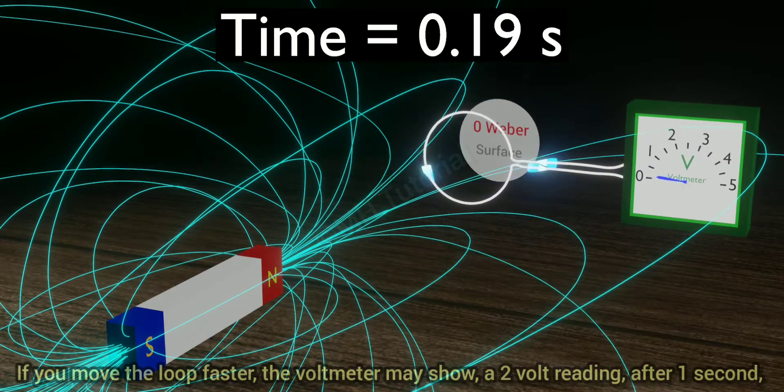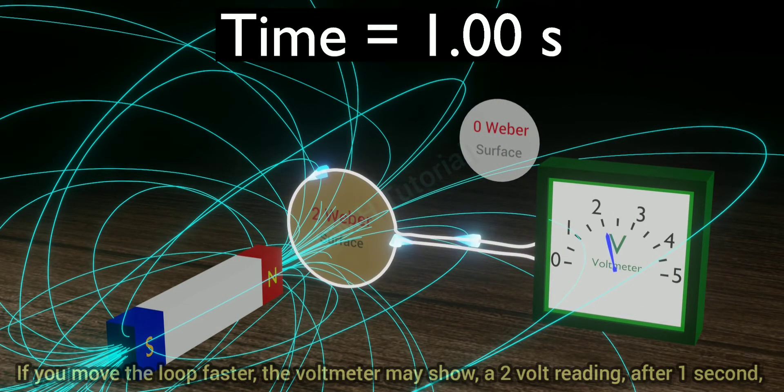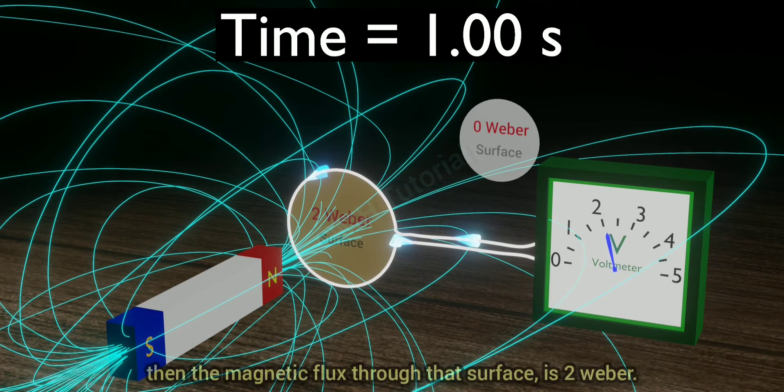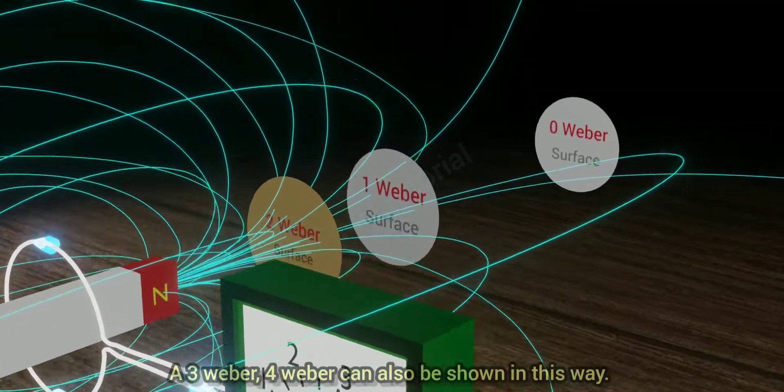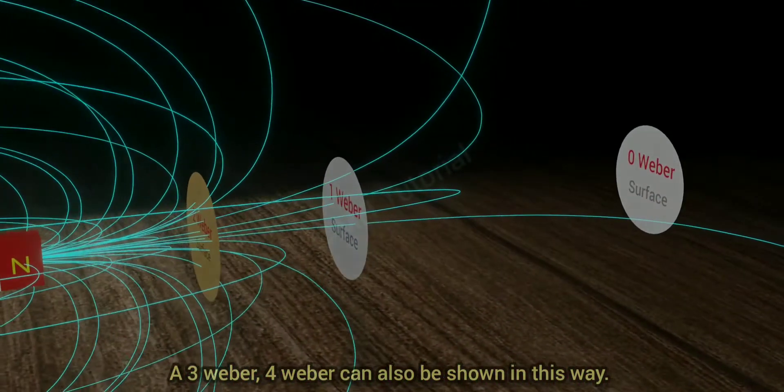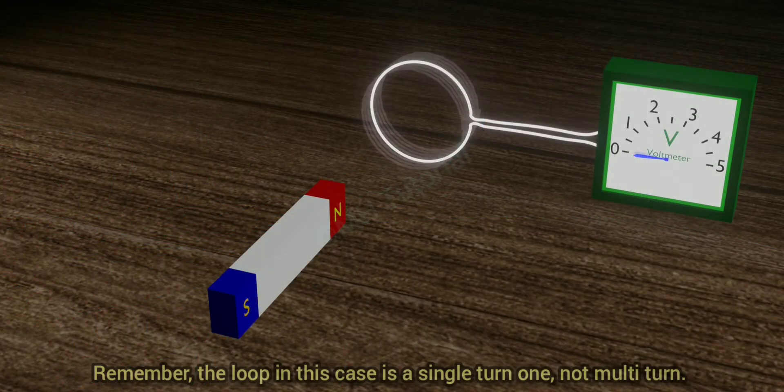If you move the loop faster, the voltmeter may show a two volt reading after one second. Then the magnetic flux through that surface is two Weber. A three Weber, four Weber can also be shown in this way. Remember, the loop in this case is a single turn one, not multi-turn.